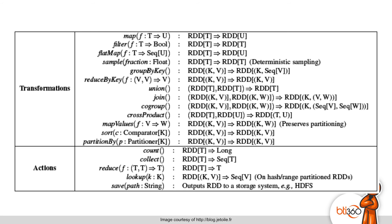Here is a graphic of some of the transformations and actions you can perform on each RDD. A transformation takes an RDD, applies a function to it, and produces another RDD. An action takes an RDD and produces a result from it.